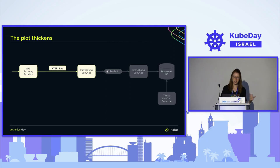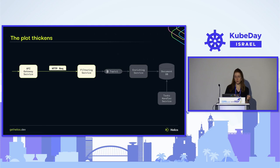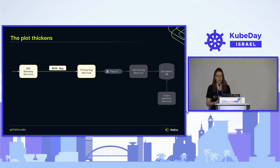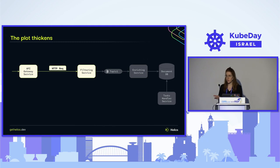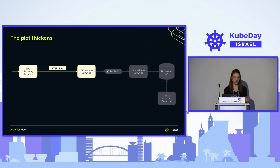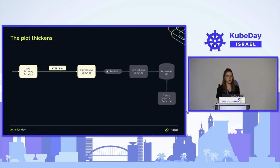We didn't see the rest of the flow: a service writing to Kafka and a service reading from Kafka. We can assume something is wrong with context propagation — and indeed, OpenTelemetry does not support this automatically. As a side note, this depends on the language, and there are some open source solutions that do implement it, but for this example let's assume it's not supported automatically.